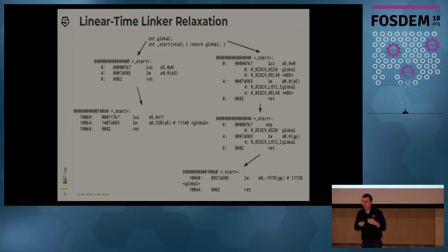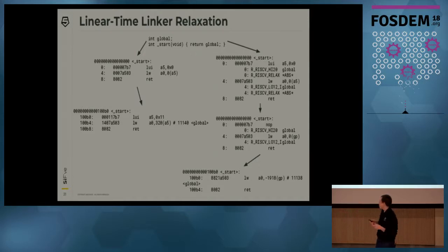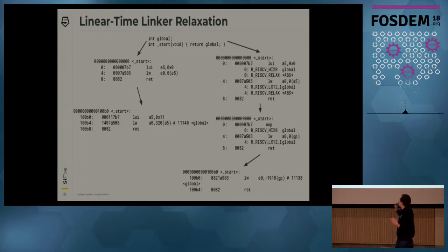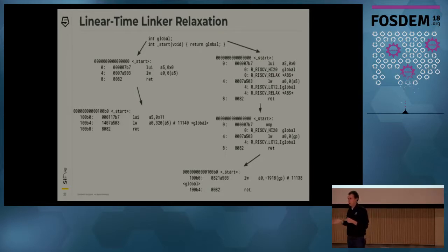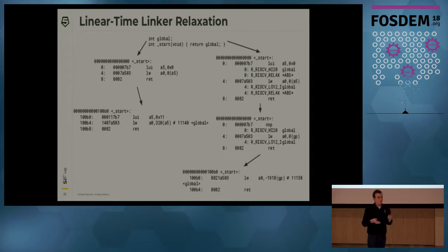For example, here's a simple program that just loads a global variable and returns it. Without linker relaxation, it requires two instructions: a LUI, which generates the top 20 bits of an address, and a load word, which generates the lower 12 bits, offset from zero — giving you a four-gigabyte range around zero for global symbols. To make this faster, we introduce a global pointer — a common optimization systems like MIPS have — which allows a smaller four-kilobyte offset loadable in a single instruction. This is important for performance on many programs, most notably Dhrystone.